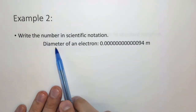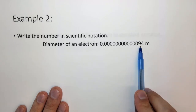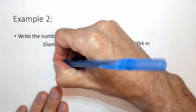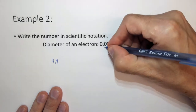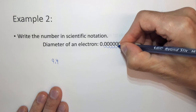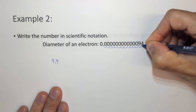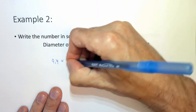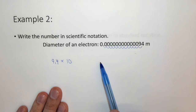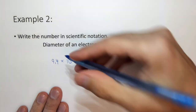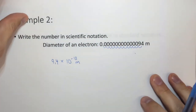Here we have a very small number — the diameter of an electron in meters. The coefficient needs to be between 1 and 10, so here we put it as 9.4. We need to move the decimal place 13 times. Since this number is much smaller than 1, the exponent is minus 13. Small numbers have negative exponents; big numbers have positive exponents.